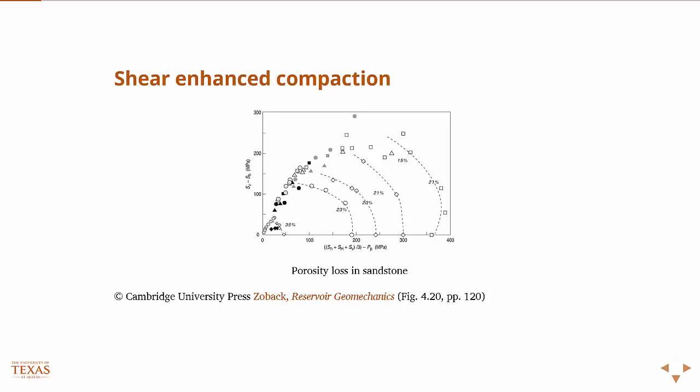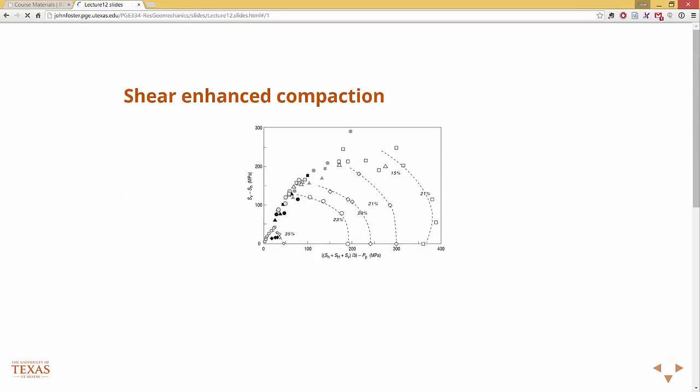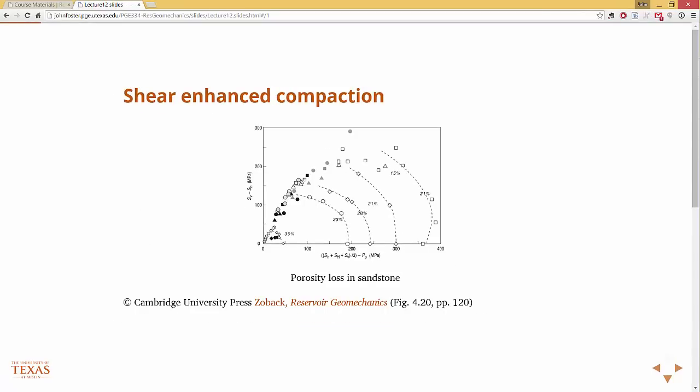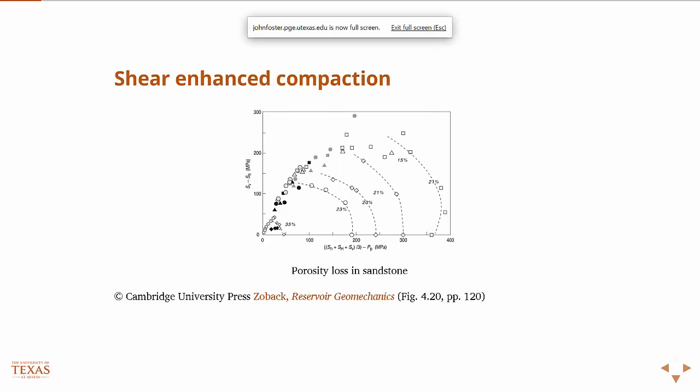If we combine that with some shear, we get failure up here along this axis, and that's the Mohr envelope. But in here, we get permanent deformation. These data points are scenarios where we increased the hydrostatic pressure, and then released it, and you had a permanent deformation. In this case, this represents a loss in porosity.